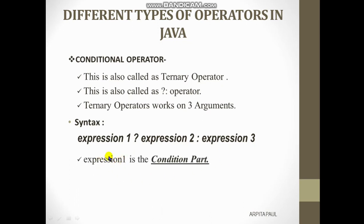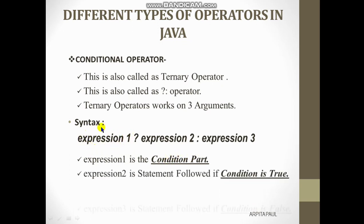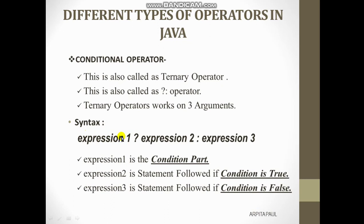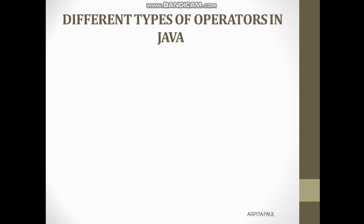The first expression represents the condition part — the condition we are going to check. Expression two contains the statement for when the condition is true; if the condition is true, execution goes to expression two. Expression three contains the false part — if the condition is false, it goes to expression three. Let me show you with an example.